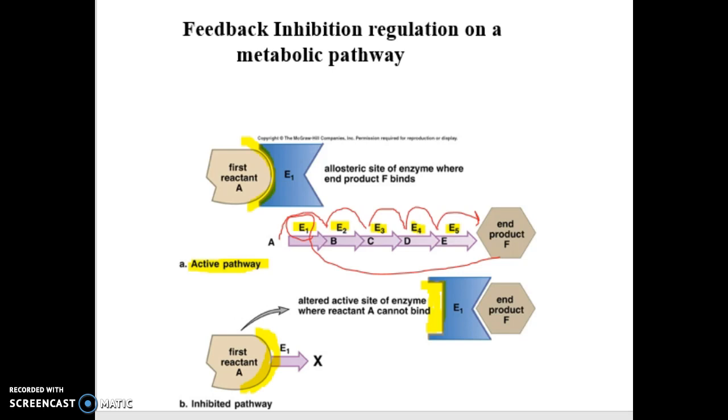Now, eventually, F's going to be used up. The end product gets used up, body does whatever with it. And when F gets removed, enzyme one kind of springs back to its original shape and then can attach to A again and the pathway can continue. So feedback inhibition is how your body regulates metabolic pathways. Think about your thermostat in your house. Same concept. Temperature goes up, thermostat says turn on the AC. AC drops the temperature down, thermostat says shut it off. Temperature goes back up, thermostat tells the AC get back on, and so on and so forth. That's feedback inhibition. That's how pathways work. So put it into an application.